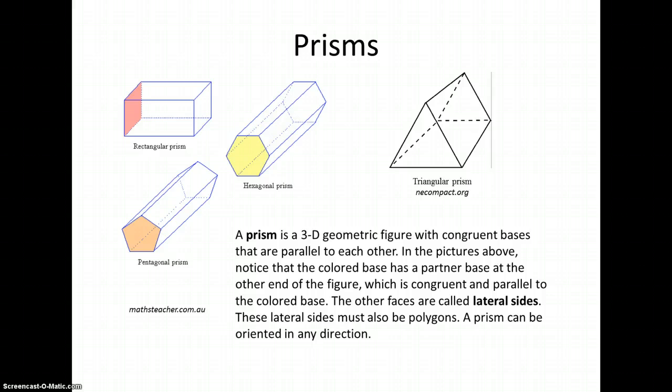In the pictures above, notice that one of the bases has been colored. Can you see the opposite base in the rectangular prism? The pink base is a rectangle and on the opposite side we have a congruent rectangle which is parallel to it.